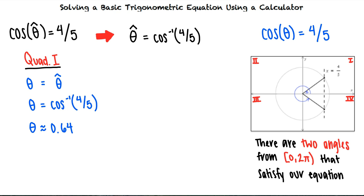The solution theta in quadrant 4 is equal to 2 pi minus the reference angle. This means that theta equals 2 pi minus cosine inverse 4 fifths. Using our calculator and rounding to the nearest hundredth, we see that theta equals 5.64.